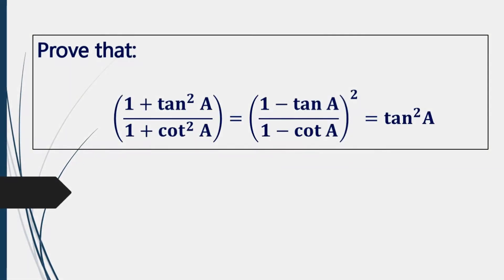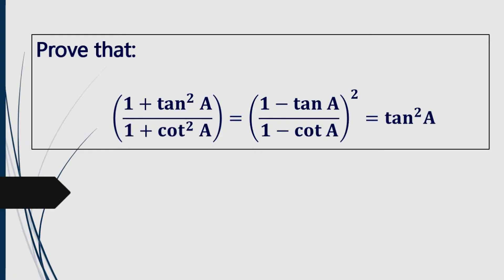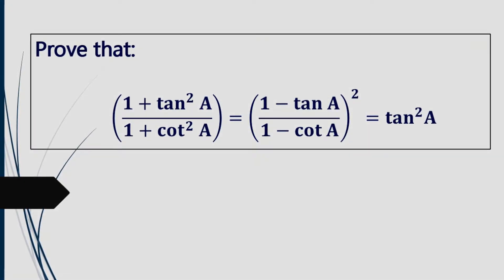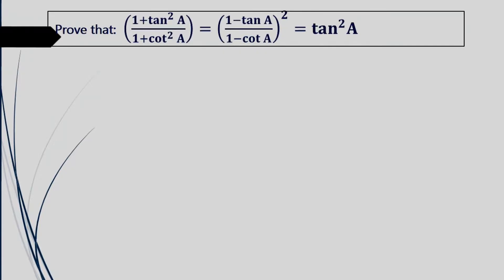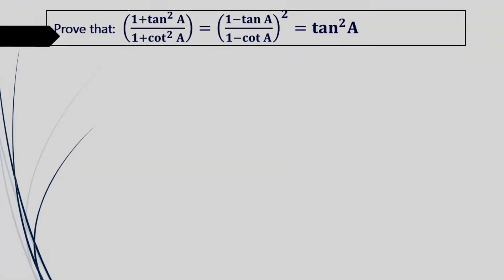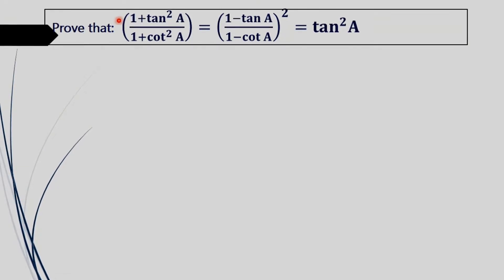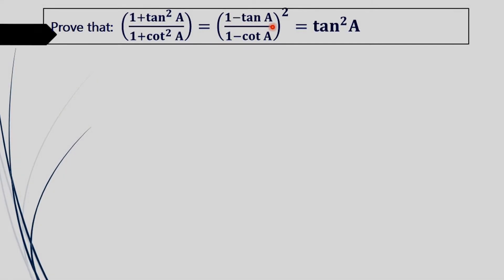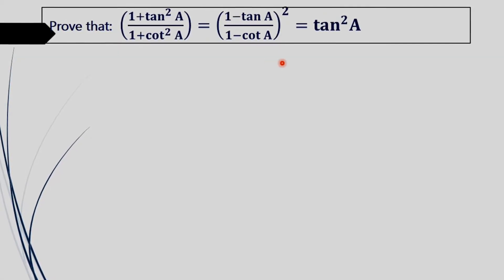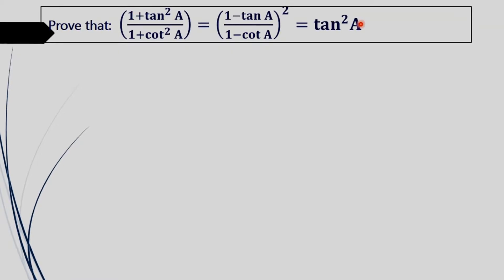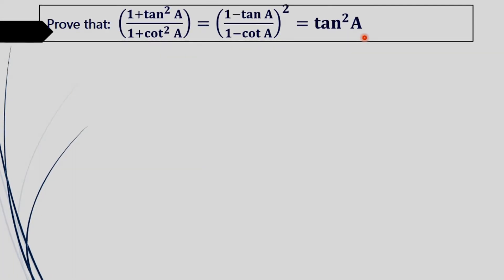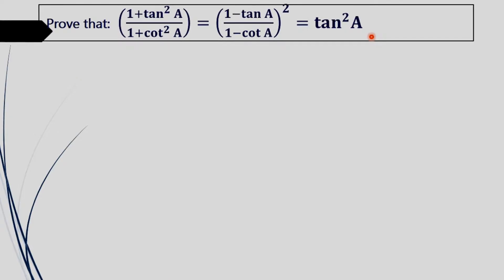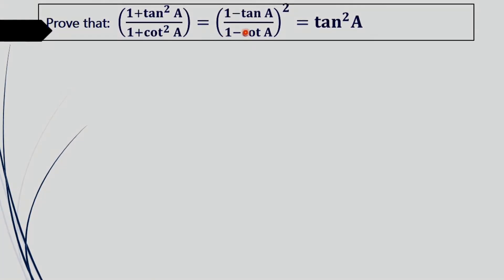In trigonometry, we have to prove that (1 + tan²a) / (1 + cot²a) equals (1 - tan a) / (1 - cot a), whole squared, equals tan²a. So we have to prove these three terms are equal. To do this, we will first prove the first term equals the third term, then prove the second term equals the third term, and hence all three terms are equal.